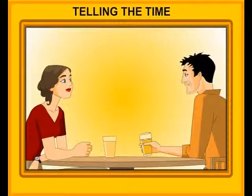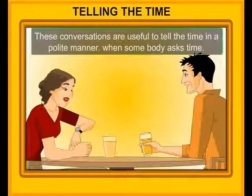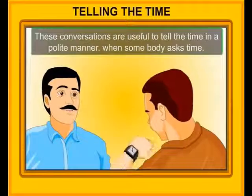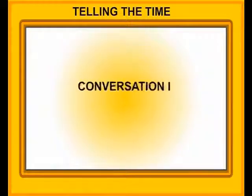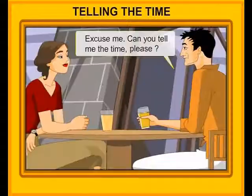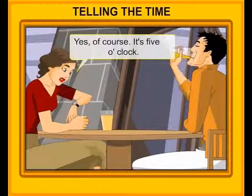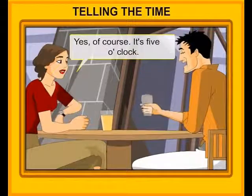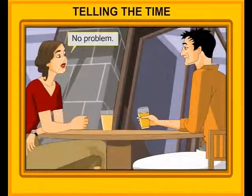Telling the time. These conversations are useful to tell the time in a polite manner when somebody asks the time. Conversation 1. Excuse me, can you tell me the time please? Yes, of course. It's 5 o'clock. Thank you. No problem.